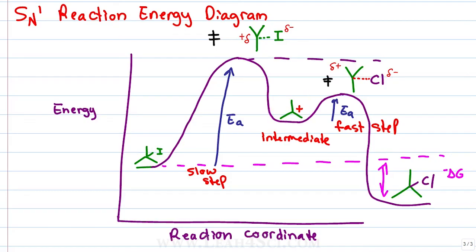We have a carbocation intermediate which we can isolate unlike the transition state, it's not very stable but it can rest for a second. The chloride will come in and attack giving us another transition state that we cannot isolate with a lower energy of activation because it's an easier and faster step and when the bonds are fully formed, the energy is released, the final molecule is very stable.